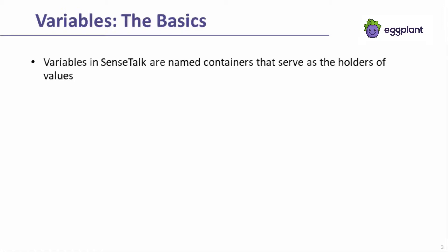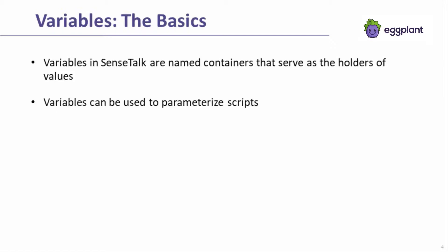Variables are named containers that you can name however you'd like so that your code can be easily understood. Variables serve to hold values or even objects such as property lists. If you are setting up a parameterized script, you'll likely use variables to do so. You can assign values to a variable using either the set command or the put command. The following examples will focus on using the set command.